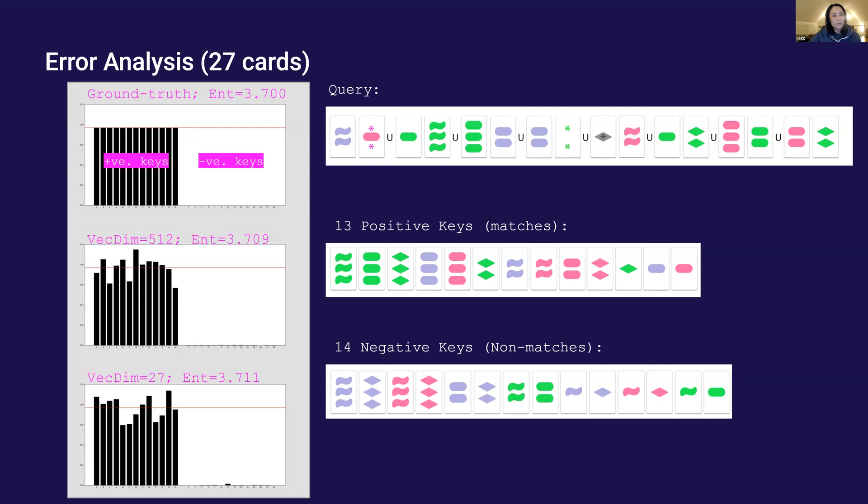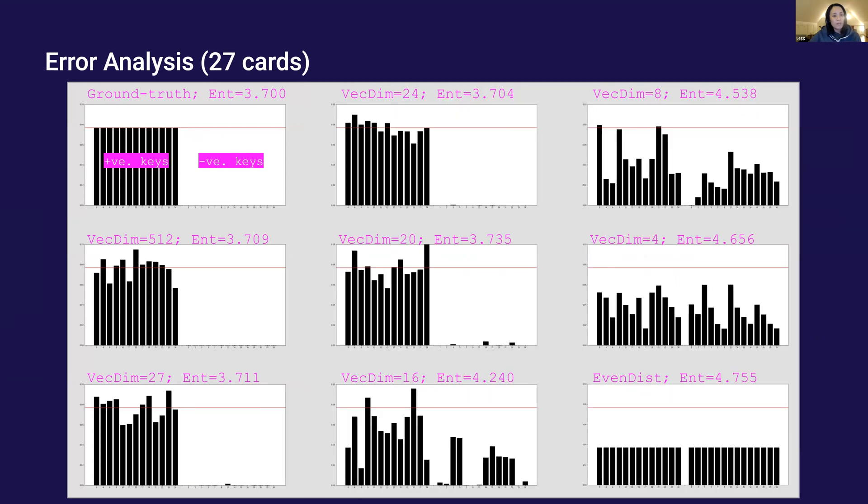The contrastive model with vector representation dimension 512, 27 are not far from perfect. But if we drop the dimension to 20 or below, we start to see mass moving to the negative keys until dimension 4, which performs about the same as a completely even distribution. It seems that as we drop the vector representation dimension, the model becomes less able to develop a preference among the keys.